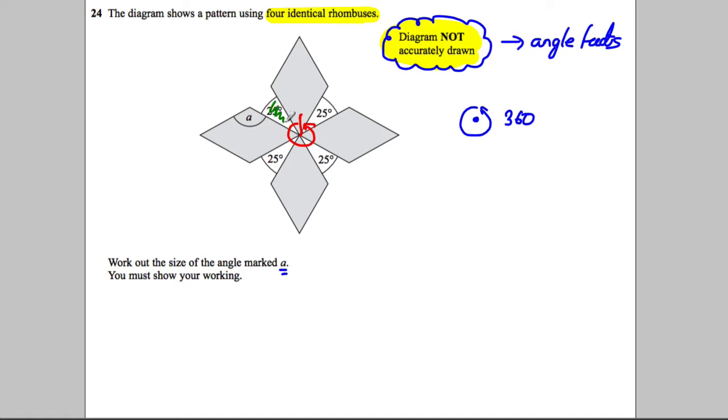Now we've got ourselves a 25 here, a 25 here, a 25 here, and a 25 here. So we could work out what all of these must add to if we subtract off those four 25s. So 4 multiplied by 25 is equal to 100 degrees. You get a mark for that.